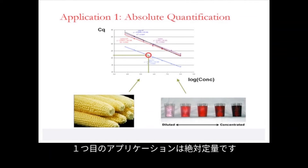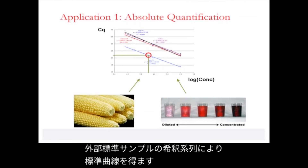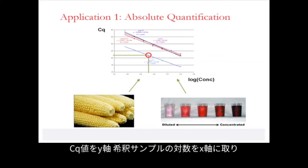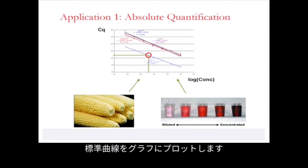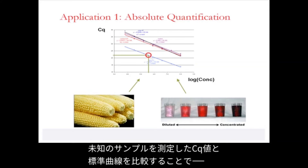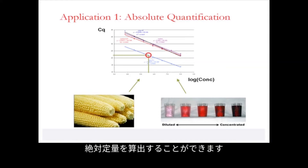The first application in our presentation is absolute quantification. Standard curve data is obtained from a dilution series of a standard sample. The standard curve is then plotted in a graph with CQ values on the y-axis and the logarithm of the dilution samples on the x-axis. We can determine absolute quantities in an unknown sample by tracing measured CQ values and matching them to corresponding absolute quantities on the standard curve.